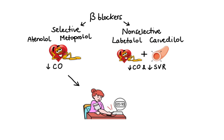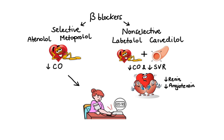Furthermore, beta blockers can inhibit beta-1 receptors present on the kidneys and thus suppress release of renin, formation of angiotensin-2 and secretion of aldosterone. These effects result in decrease in systemic vascular resistance and again a fall in blood pressure. To learn more about alpha and beta blockers, make sure you check out my video about adrenergic antagonists.